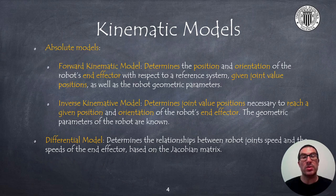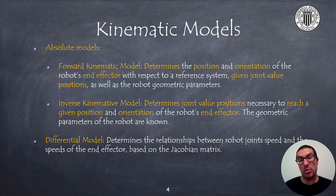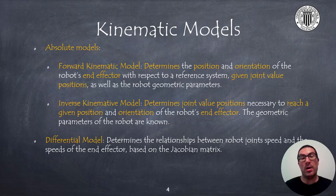We can distinguish two types of kinematic models: absolute and differential ones. Absolute models are expressed through absolute variables such as joint angles, joint positions, or the position and orientation of the end effector, while in differential models there are relationships at the level of velocities, whether linear or angular.